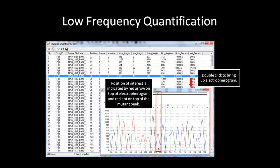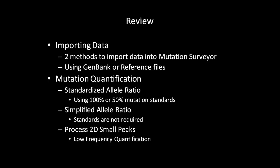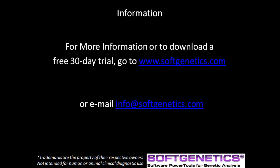The report can be saved by clicking on the Save icon in the toolbar. We discussed the different methods for importing data and the difference in reporting for the base position when you select different types of files for analysis, such as GenBank, SEQ, or normal reference files. Then we discussed the two different methods of mutation quantification and the difference between them. Lastly, we can use the mutation quantifier tool to quantify a low-frequency variant given that the Check 2D Small Peaks option was selected in the process settings. This concludes SoftGenetics' webinar on mutation quantification with Mutation Surveyor software. If you would like more information or want to try a free 30-day trial, please visit www.softgenetics.com or send an email to info@softgenetics.com. You may also request online training if you are interested in learning about the software and its capabilities. Thank you for joining me in this webinar.